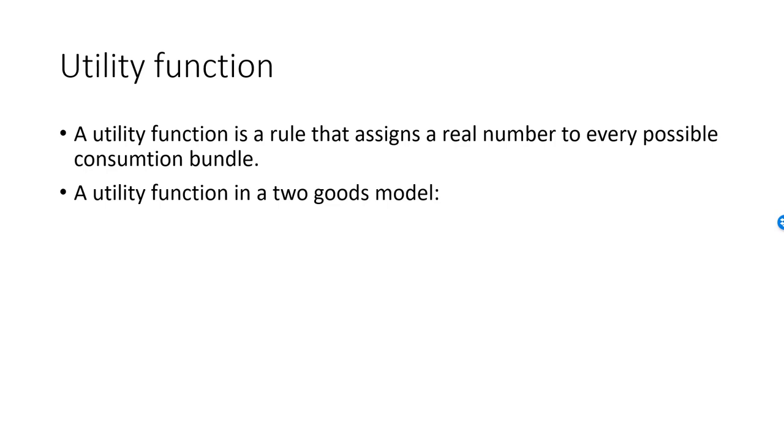In the two-goods model, a bundle consists of x1 units of the first good and x2 units of the second good, where x1 and x2 must be greater than or equal to zero.